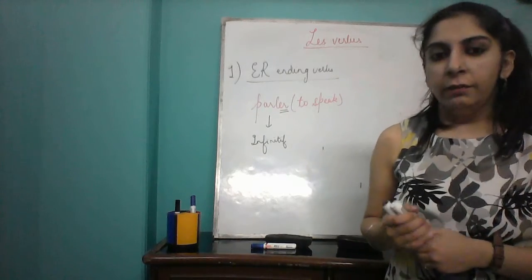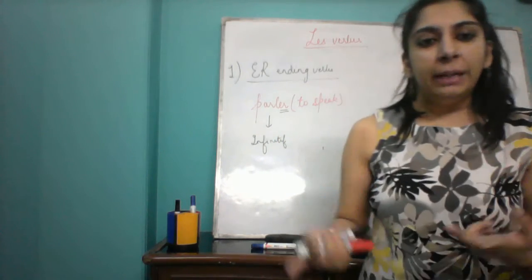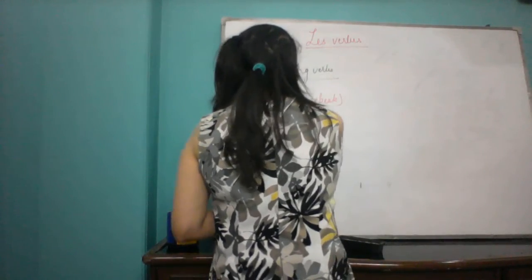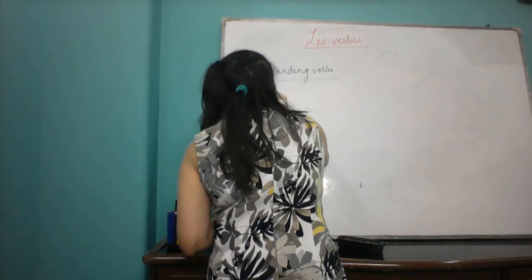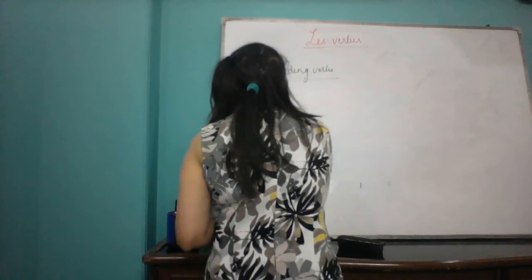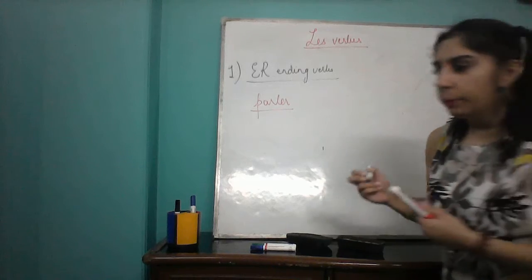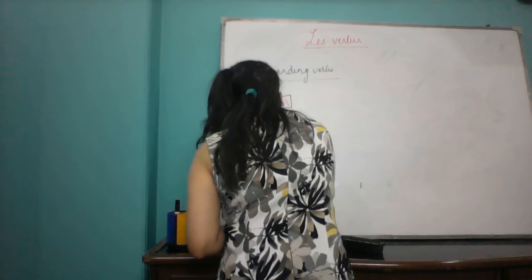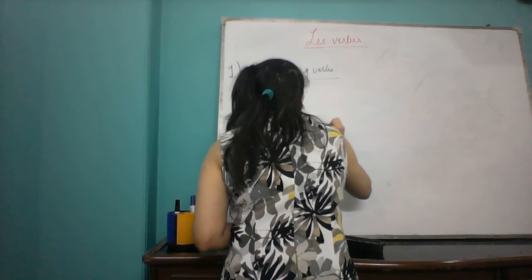What we are going to do is understand the rules associated with conjugating ER ending verbs, and then we will practice conjugating them. The first rule for conjugating an ER ending verb is that we need to find the root. We do this by following a simple rule: we remove the ER from the ending.